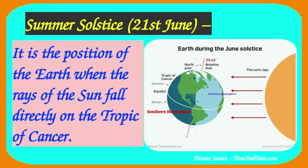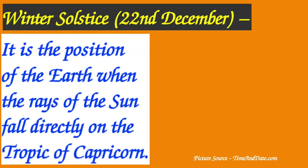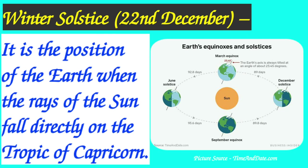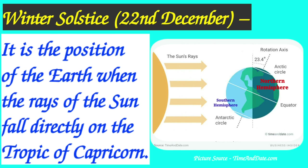So it is summer in the northern hemisphere and winter in the southern hemisphere. Winter solstice occurs on 22nd December. It is the position of the earth when the rays of the sun fall directly on the Tropic of Capricorn. As a result, the northern hemisphere experiences the shortest day and the longest night, so it is winter in the northern hemisphere and summer in the southern hemisphere.